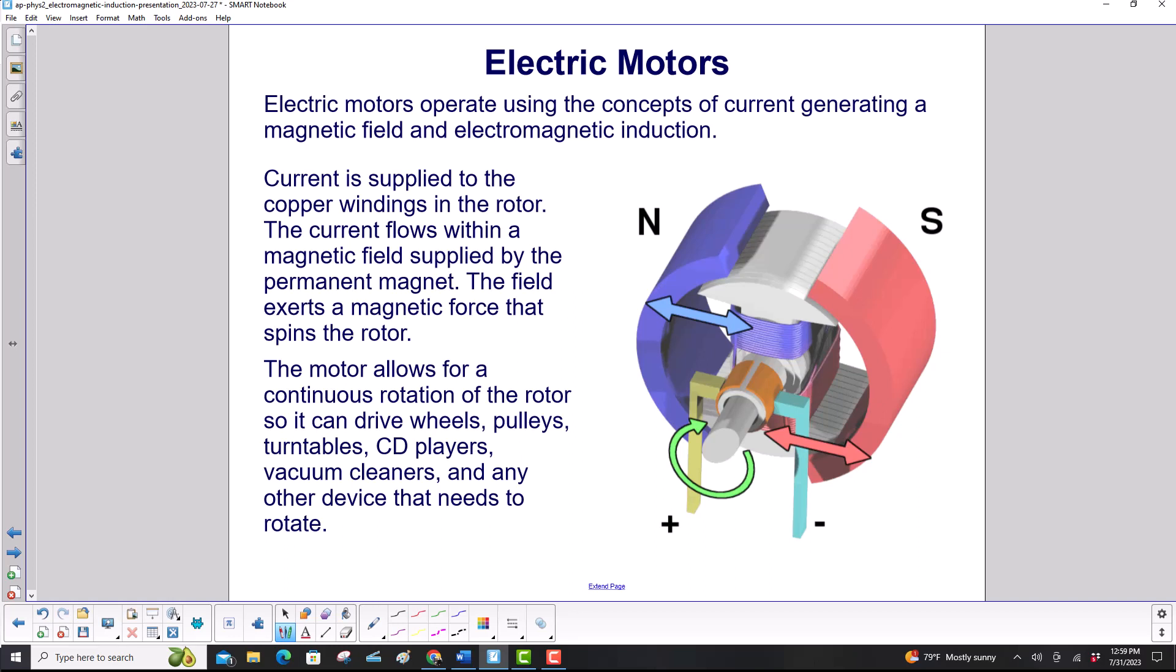Current is supplied to the copper windings in the rotor, right here, and that will be generating a magnetic field. Also, this current flows within another magnetic field created by the permanent magnet. That field exerts a magnetic force that spins the rotor.